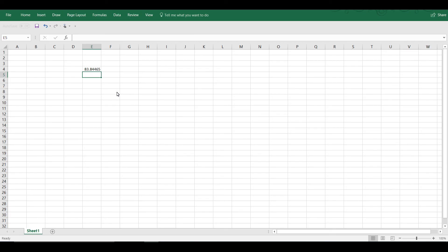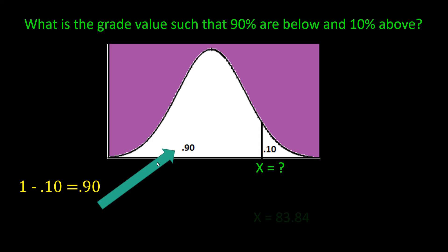Let's round that to 83.84. So the answer is x is equal to 83.84. So if a student scored an 83.84, only 10% of the class got higher than that grade, and of course that means that 90% of the class, 1 minus 10%, got that grade or lower. And that's it.